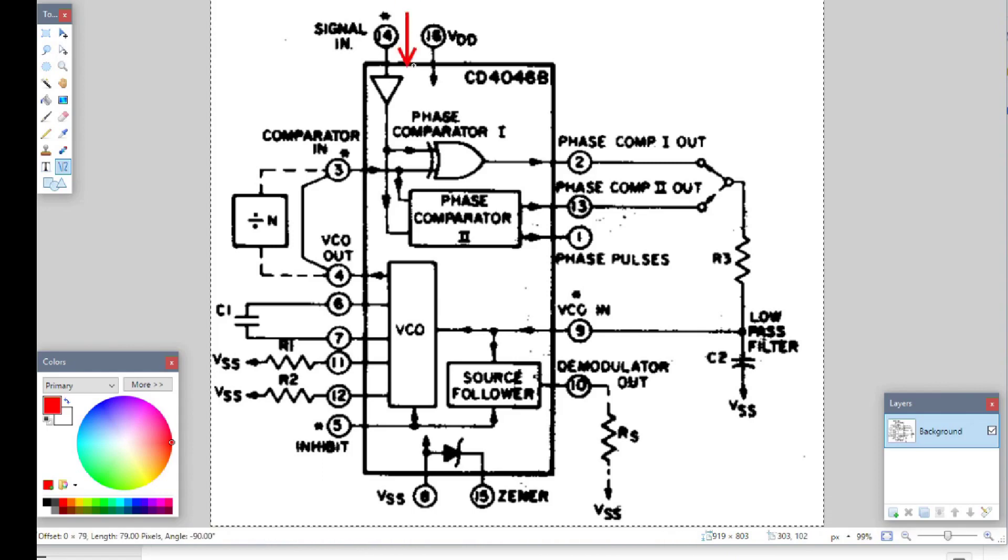So you've got a signal in, and it's going to go through our phase comparator. Now, there are actually two on this chip, but I'm going to assume it's this exclusive OR one up here. I could be wrong, but it doesn't really matter, because they go to the same spot. So we've got the phase comparator out.